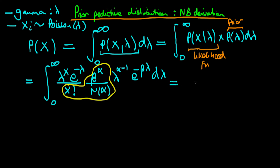So we get that this is equal to beta to the power alpha divided through by x factorial times gamma of alpha. Then we're going to combine some of the remaining terms: lambda to the power x times lambda to the power alpha minus 1 — because we've got the same base, we can just add the powers.